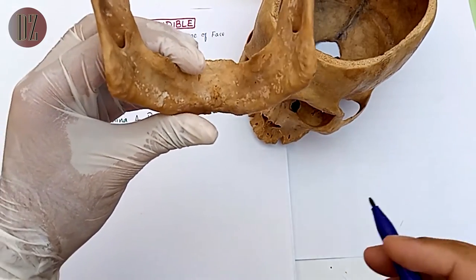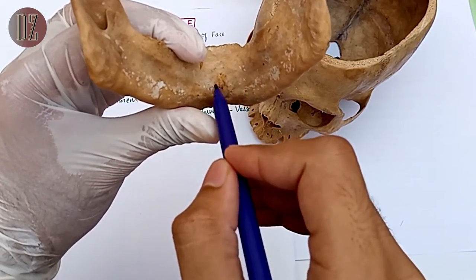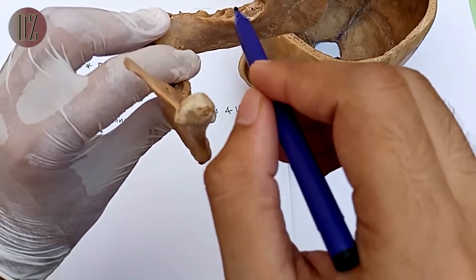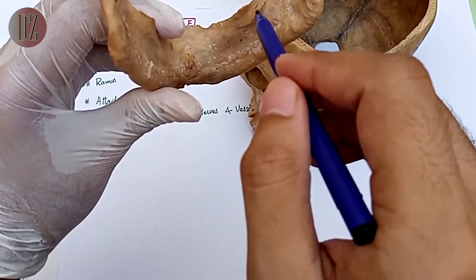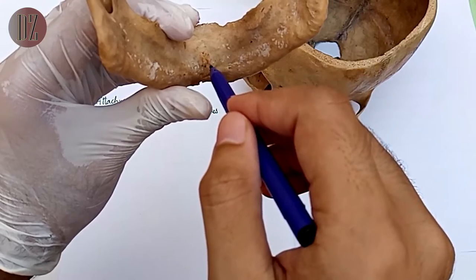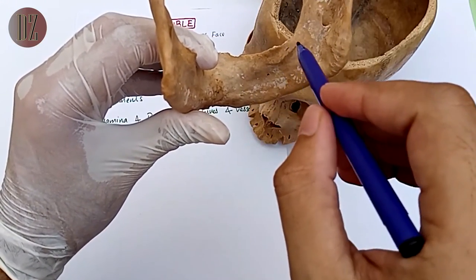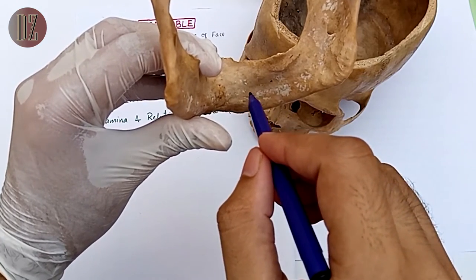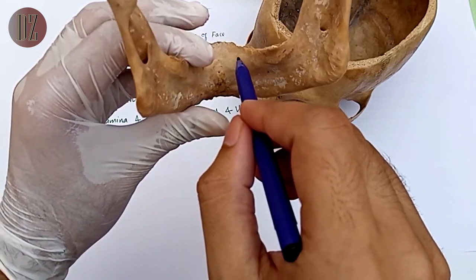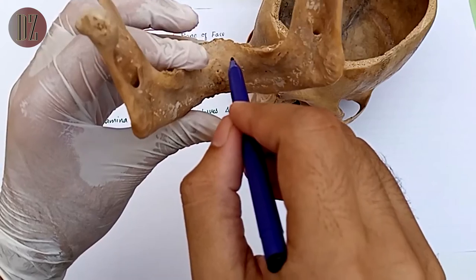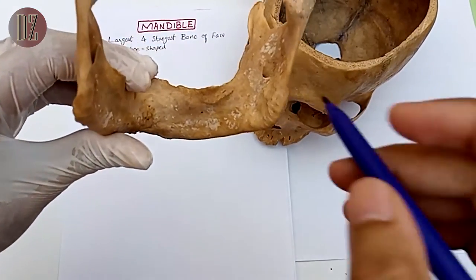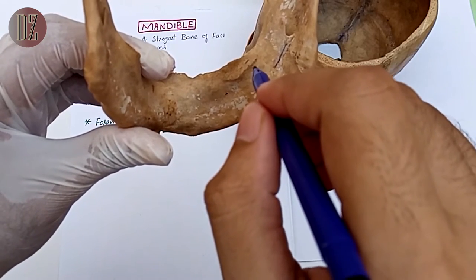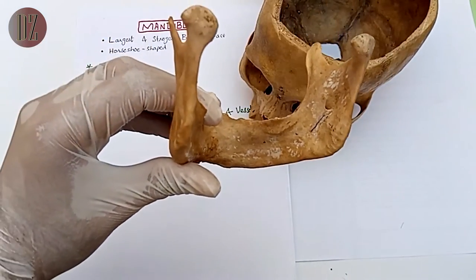Now we will see the structures present on the inner surface of the mandible. On the posterior aspect of the symphysis menti there are four small elevations called the superior and inferior genial tubercles. On the side, beneath the third molar teeth, there is a strong ridge that starts from there and ends on the side of the genial tubercles — this ridge is called the mylohyoid line. Below the mylohyoid line is a fossa called the submandibular fossa, which lodges the submandibular gland. Above the mylohyoid line is a fossa called the sublingual fossa, which lodges the sublingual gland. On the ramus there is a depression called the mylohyoid groove, which meets the mylohyoid line of the body of the mandible.